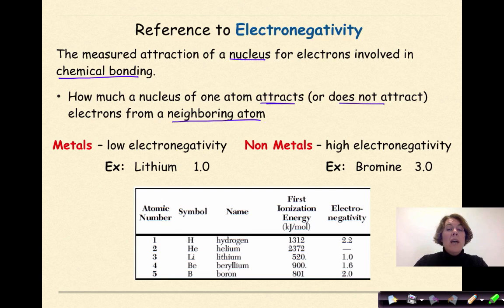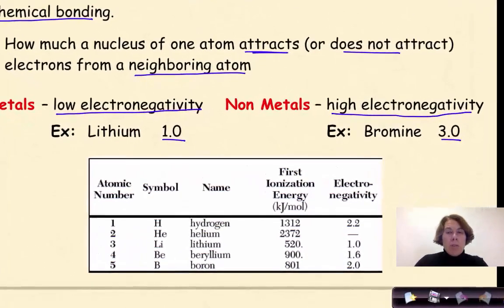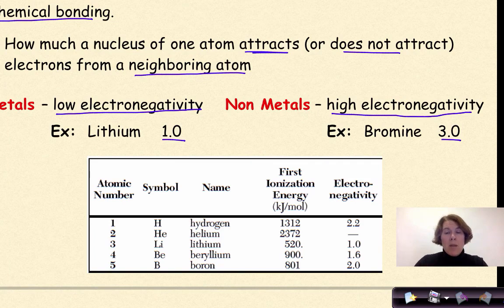Metals in general tend to have low electronegativity values. For example, lithium has an electronegativity value of one, while non-metals have high electronegativity values. For example, bromine is three. And here is a snapshot from your reference table, Table S.